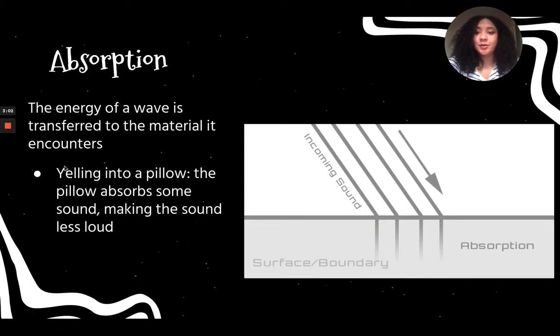Next is absorption. That's the energy of a wave that's transferred to the material it encounters. Have you ever seen on TV, or maybe you've done it yourself, when people are really mad, they scream into pillows, and you can't really hear that scream? That's because the pillow is absorbing the sound waves. The pillow is absorbing some of the sound, making it less loud to hear. If a person just screamed, it would be a lot louder than if a person is screaming into a pillow because of the absorption.